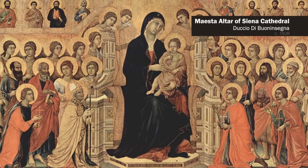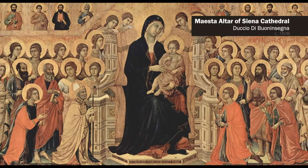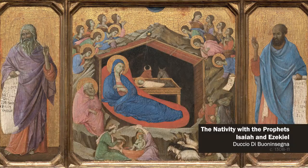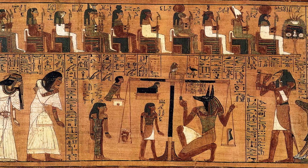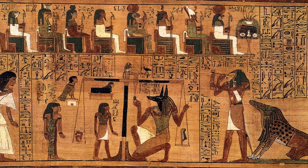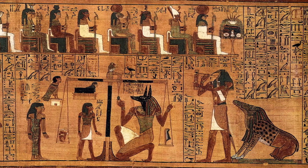Artists often used a certain hierarchy in their depictions of figures, where more powerful figures took up more space on a canvas than inferior ones did. Art from ancient Egypt and the Byzantine era are good examples of this.